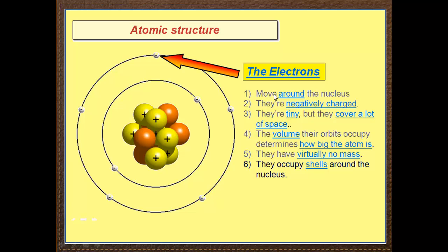So what do you know about electrons? Well, they move around the nucleus. They're negatively charged. They're tiny, but they cover a lot of space. Most of the space in the atoms occupy orbits or shells. The volume their orbits occupy determines how big the atom is. They have virtually no mass. So each electron is about a 2,000th the mass of a proton or neutron.